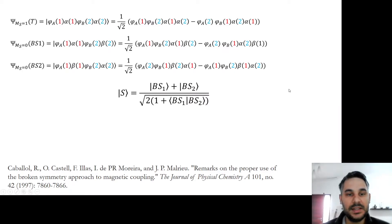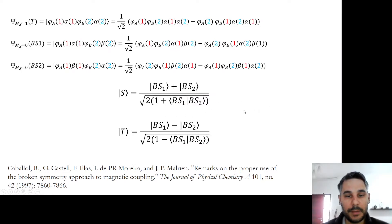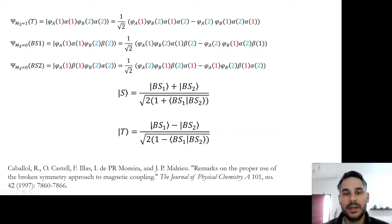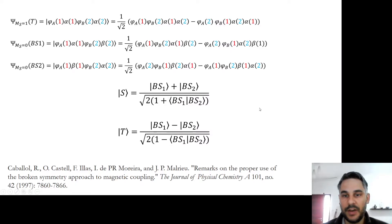Using this we can define the singlet to be a plus linear combination of the broken symmetry 1 and broken symmetry 2 solutions, divided by a normalization factor. The ms equals zero component of the triplet can be obtained as a subtracting linear combination of the broken symmetry 1 and broken symmetry 2 solutions, again divided by a normalization factor.